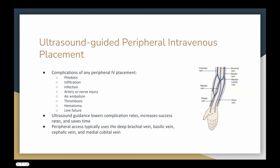With peripheral IV placement there are many potential complications: phlebitis, infiltration, infection, artery or nerve injury, air embolism, thrombosis, hematoma, or line failure. Ultrasound guidance in general lowers complication rates, increases success rates, and saves time. Peripheral access generally uses the deep brachial vein, basilic vein, cephalic vein, and medial cubital vein.